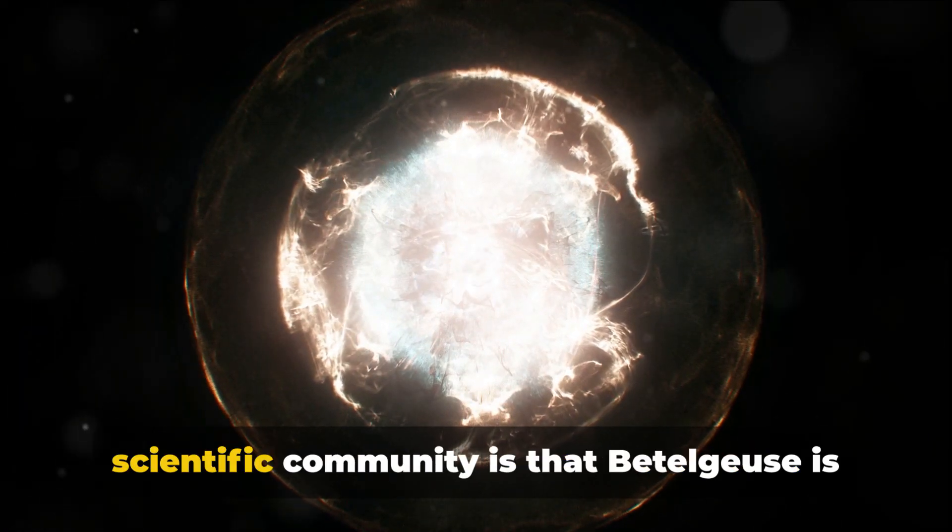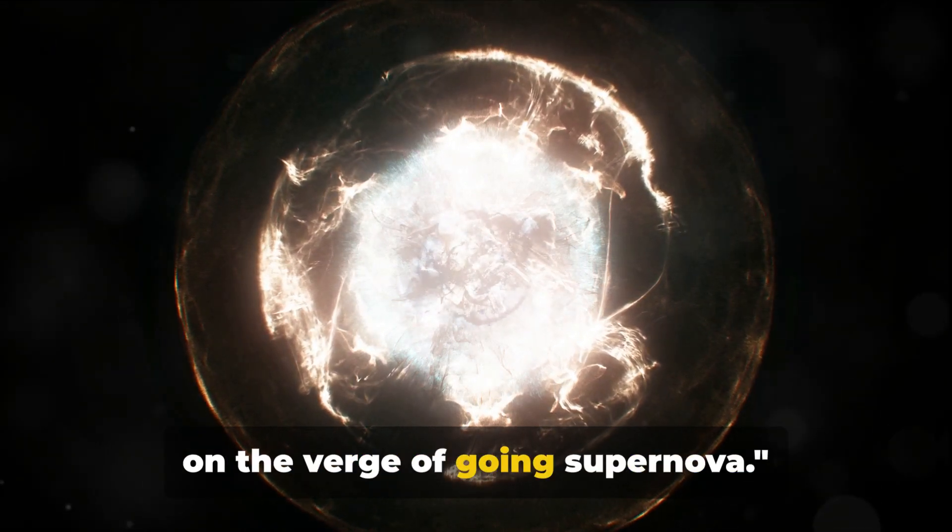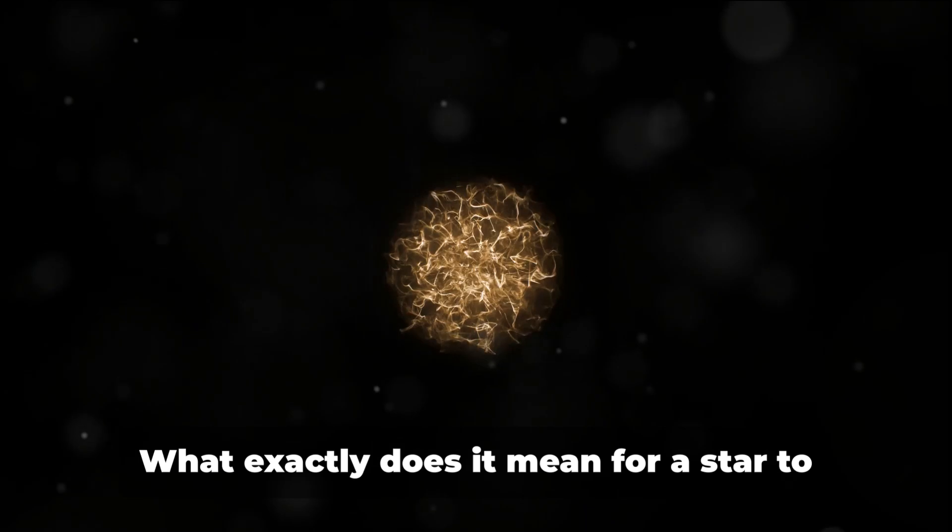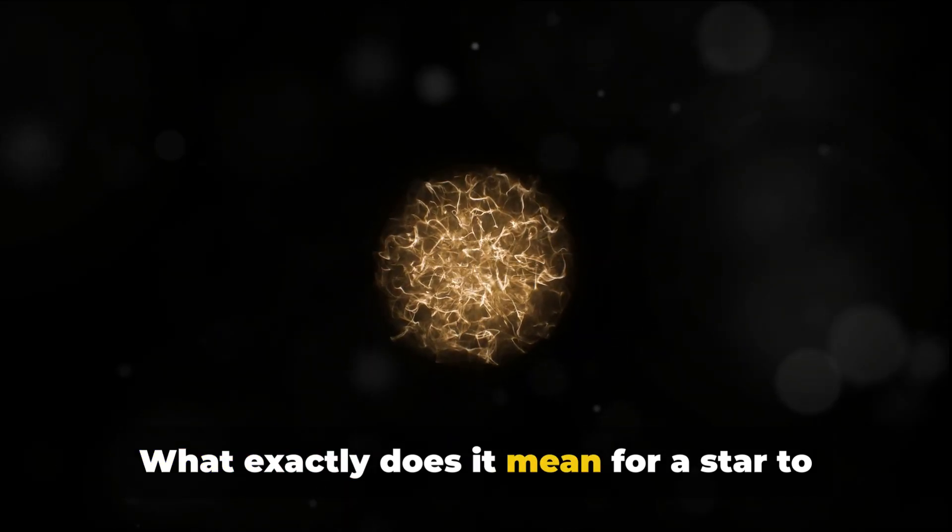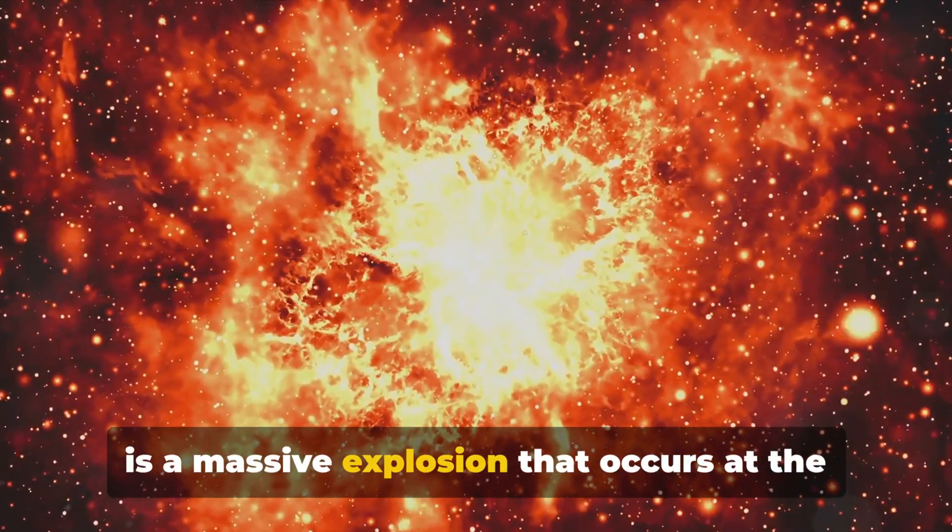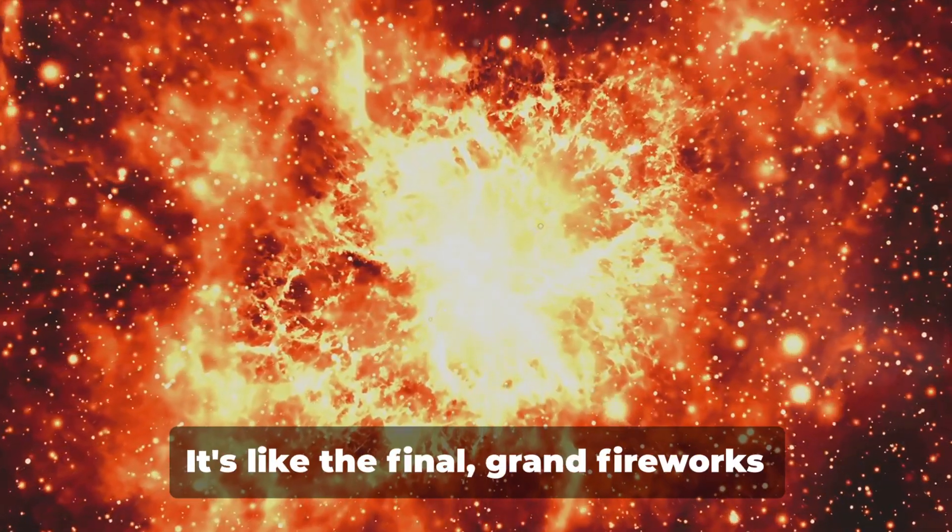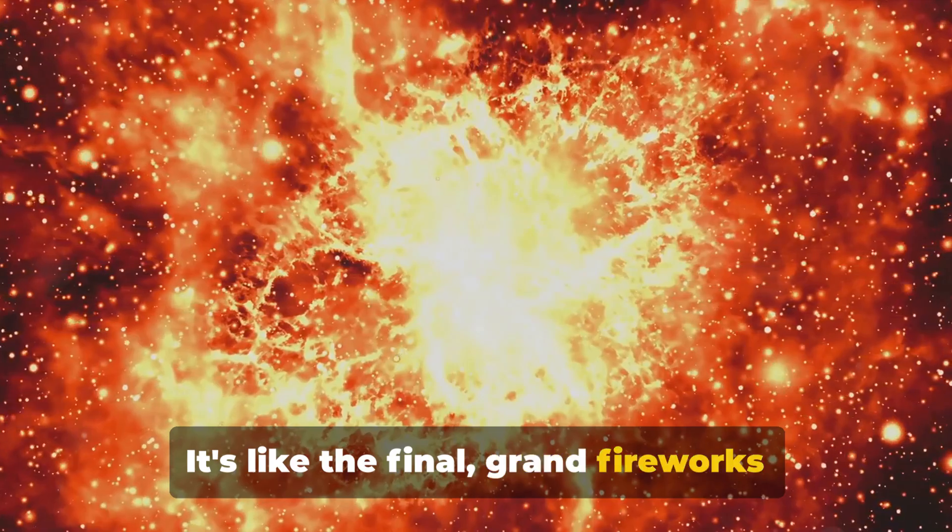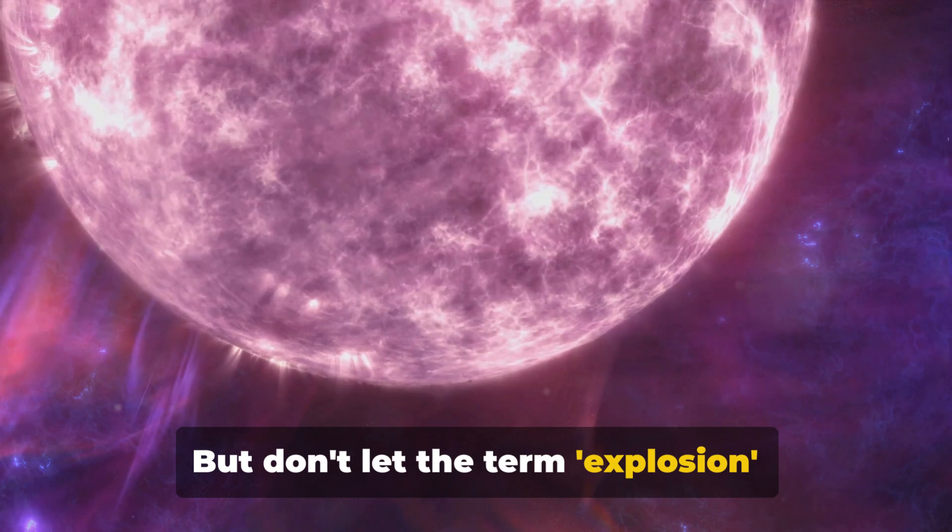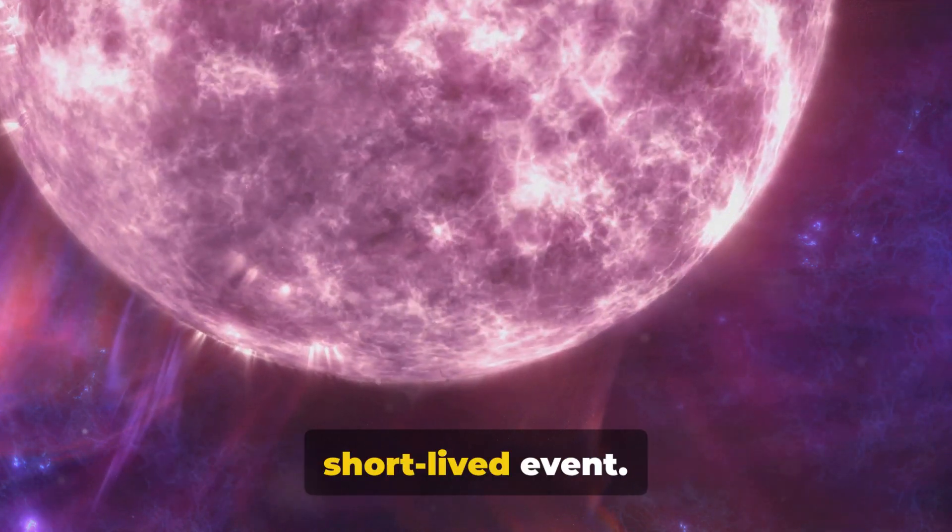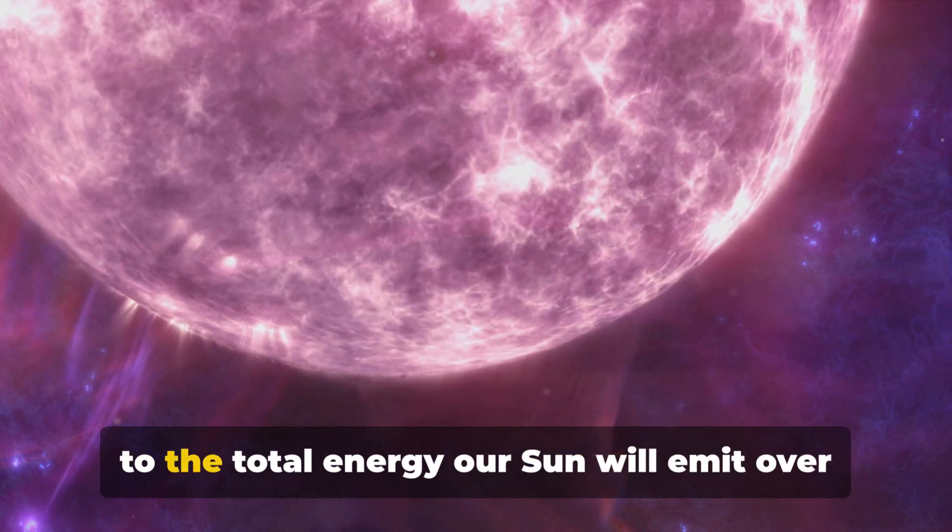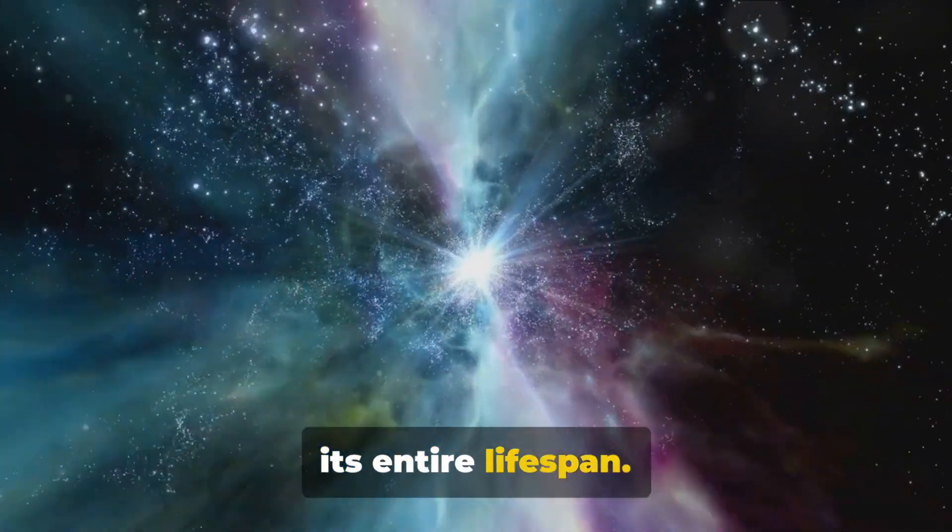One theory that has captivated the scientific community is that Betelgeuse is on the verge of going supernova. Now let's delve deeper into this fascinating theory. What exactly does it mean for a star to go supernova? In simple terms, a supernova is a massive explosion that occurs at the end of a star's life cycle. It's like the final grand fireworks display of a star, marking the end of its stellar journey. But don't let the term explosion mislead you into thinking it's a quick, short-lived event. A supernova is an event of cosmic proportions, releasing energy equivalent to the total energy our sun will emit over its entire lifespan.